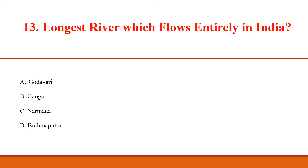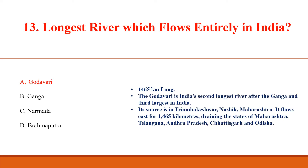Longest river which flows entirely in India: Answer A: Godavari, 1,465 km long. The Godavari is India's second longest river after the Ganga and the third largest in India. Its source is in Trimbakeshwar, Nashik, Maharashtra. It flows east for 1,465 km, draining the states of Maharashtra, Telangana, Andhra Pradesh, Chhattisgarh, and Odisha.